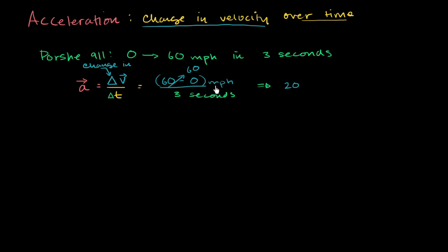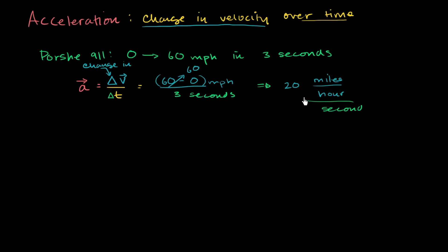But then the units are a little bit strange. We have miles per hour — instead of writing MPH I'm going to write miles per hour — and then in the denominator we have seconds, which is a little bit strange. As you'll see, the units for acceleration do seem a little bit strange, but if we think it through it might make sense. Miles per hour per second. This is saying that every second this Porsche 911 can increase its velocity by 20 miles per hour. So its acceleration is 20 miles per hour per second to the east.